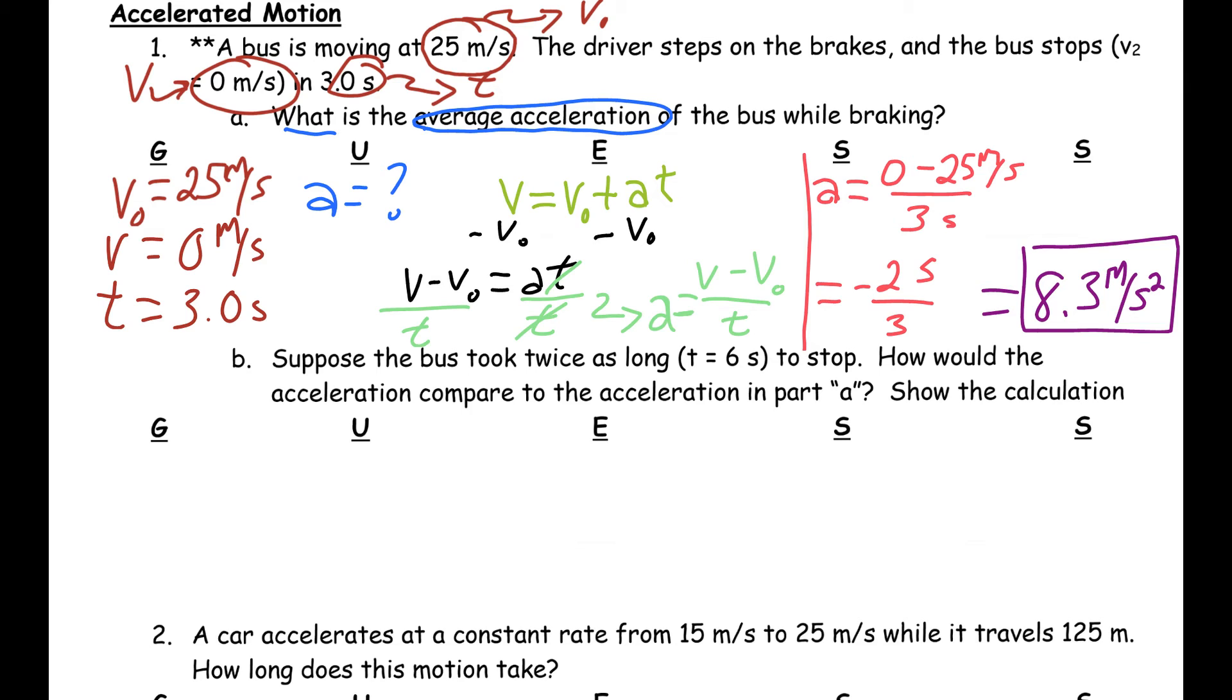So, our V₀ is still going to be 25. Our V is still going to be 0. But our T this time is going to be 6. We don't have the same acceleration, but we're still looking for acceleration. We still have to solve the formula. We're still going to start with this formula. We're going to rearrange it the same way to say acceleration equals V minus V₀ over T. And then when we plug in our values, it'll be pretty much the same except instead of 3 for the time, we're going to plug in 6.